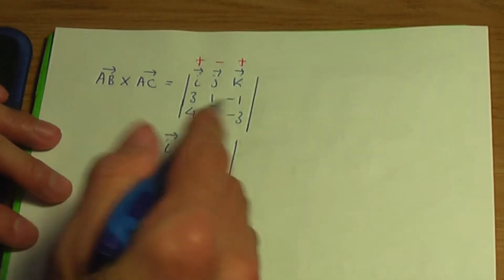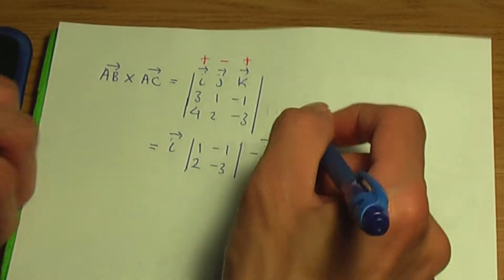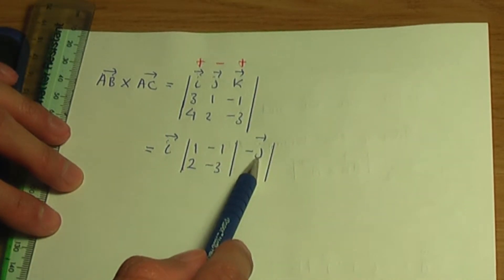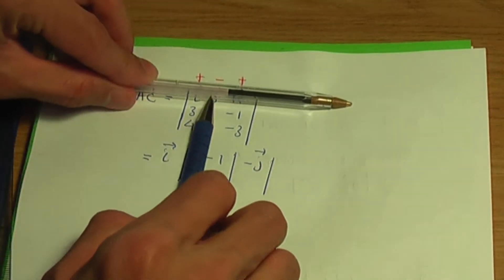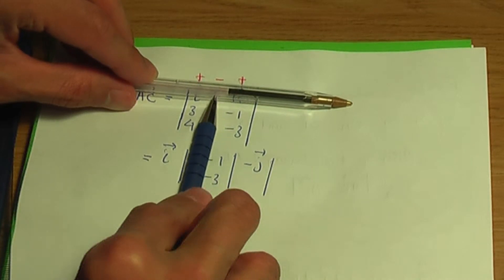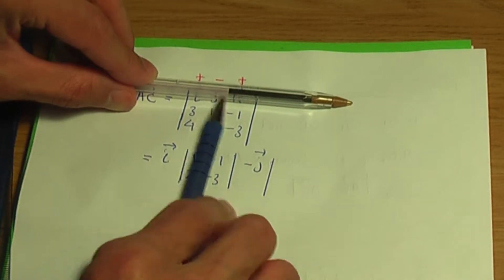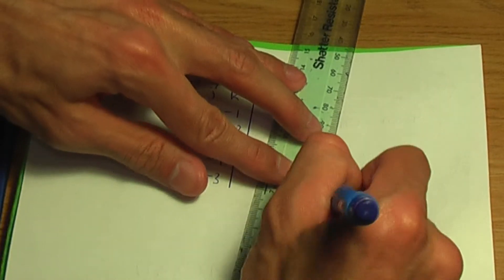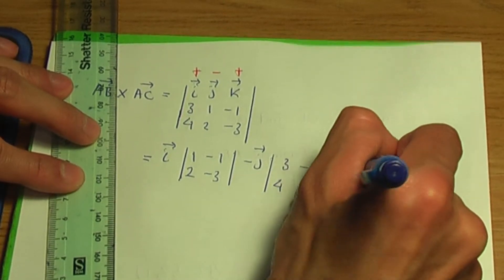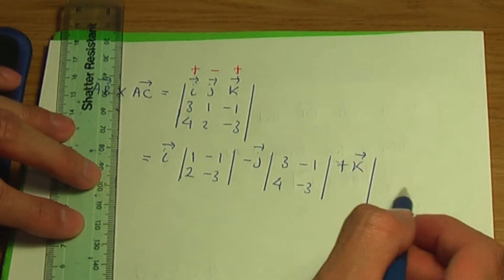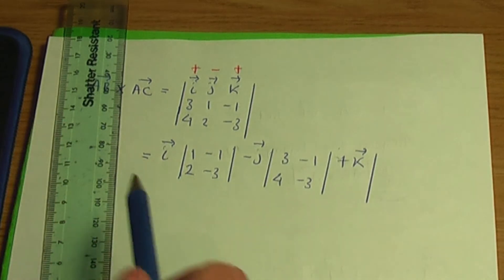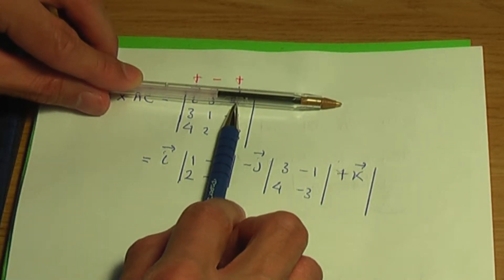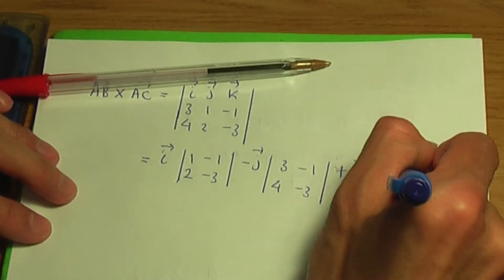Continuing along the row: minus J multiplied by the 2 by 2 determinant with elements 3, minus 1, 4, minus 3, found by ignoring the row and column of J. Plus K multiplied by the 2 by 2 determinant with elements 3, 1, 4, 2, found by ignoring the row and column of K.